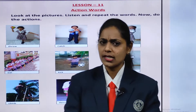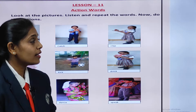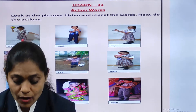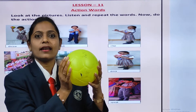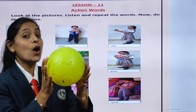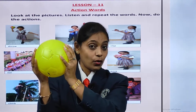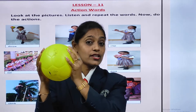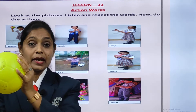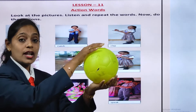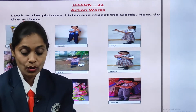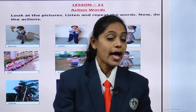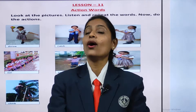Here one boy is there — what is he doing? He is catching something in his hand. Can you see? Now tell me, what is this? I am having a ball, and what am I doing? I am catching the ball. Suppose if I throw, then also I catch. So what action am I doing here, children? Catch! All of you repeat: catch. Very good. So we have done two actions — throw and catch.